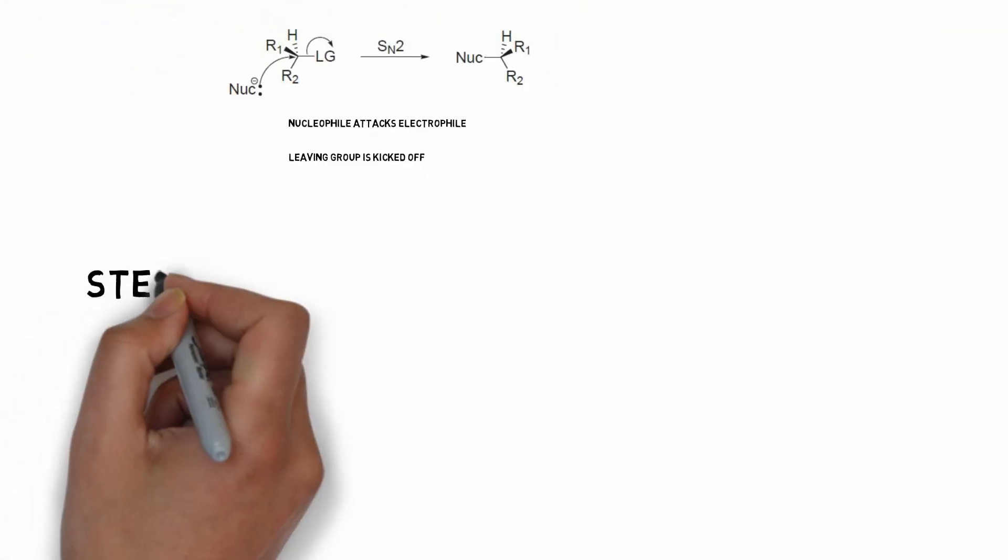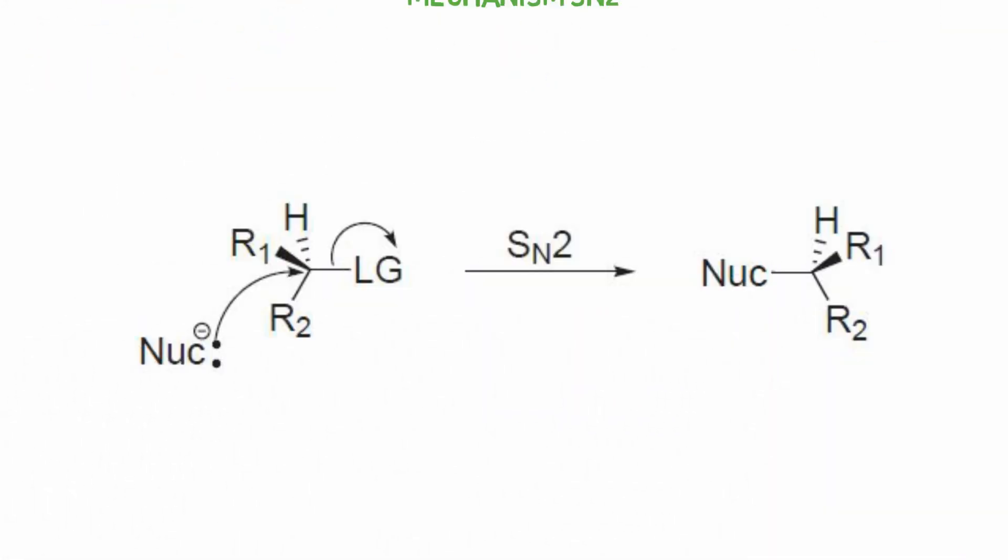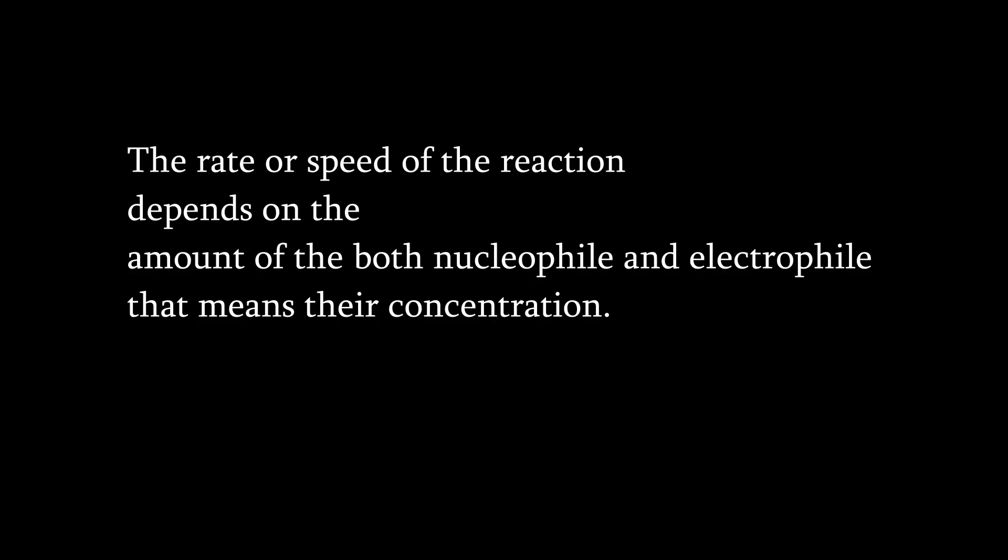In SN2 reaction, the nucleophile attacks the electrophile, and the leaving group leaves in a single step. And if we take into account the kinetics of the nucleophilic substitution reaction, that means how fast the reaction happens, it depends on how fast the nucleophile finds the electrophile. In SN2 reaction, the rate depends on the concentration of the nucleophile and electrophile. Thus, it is bimolecular, and it explains the number two of SN2.